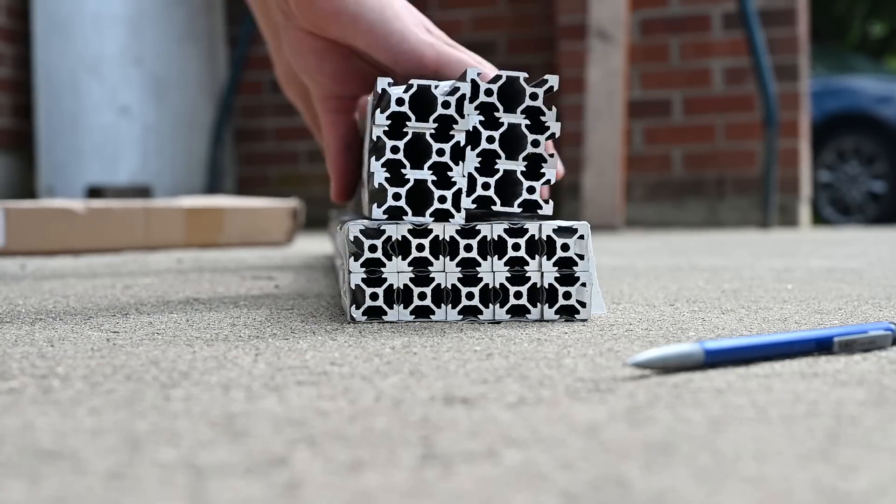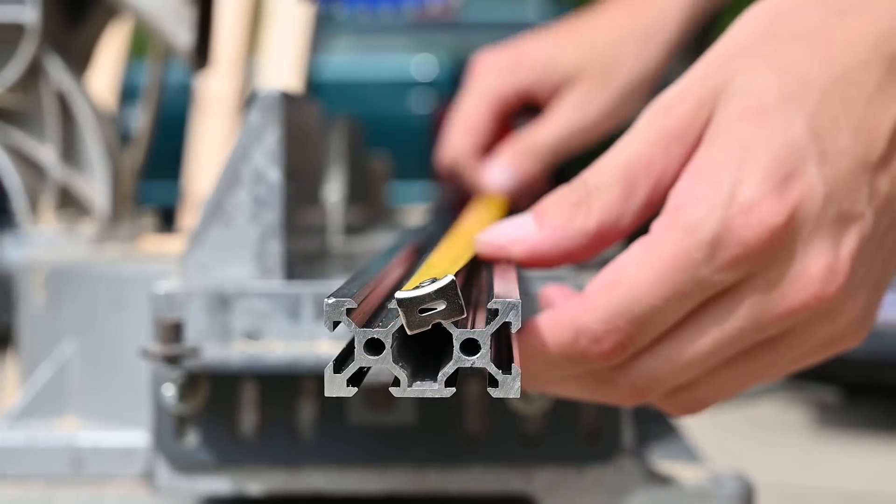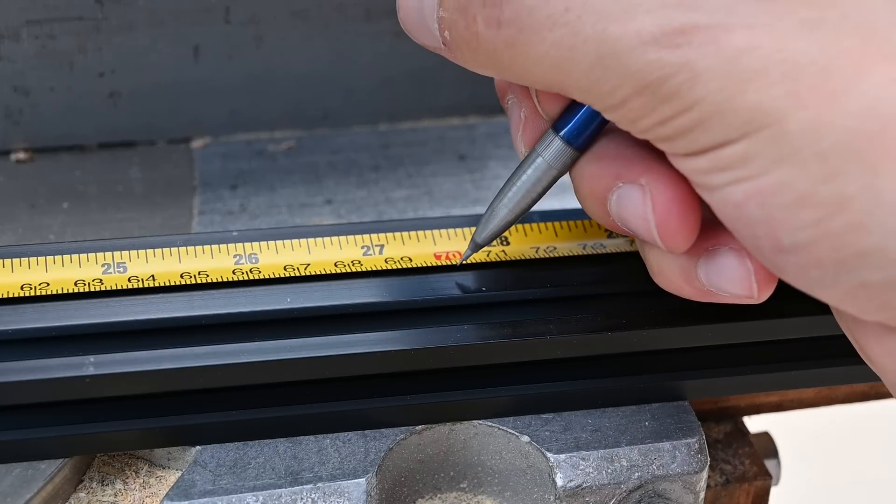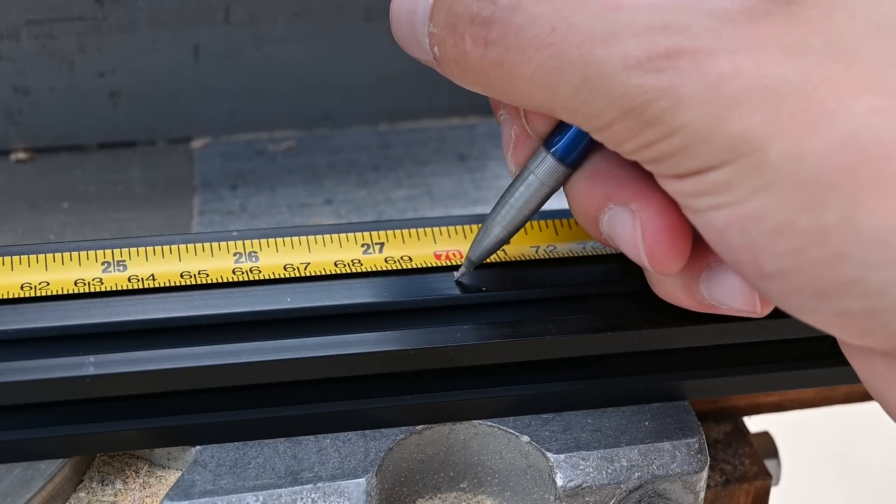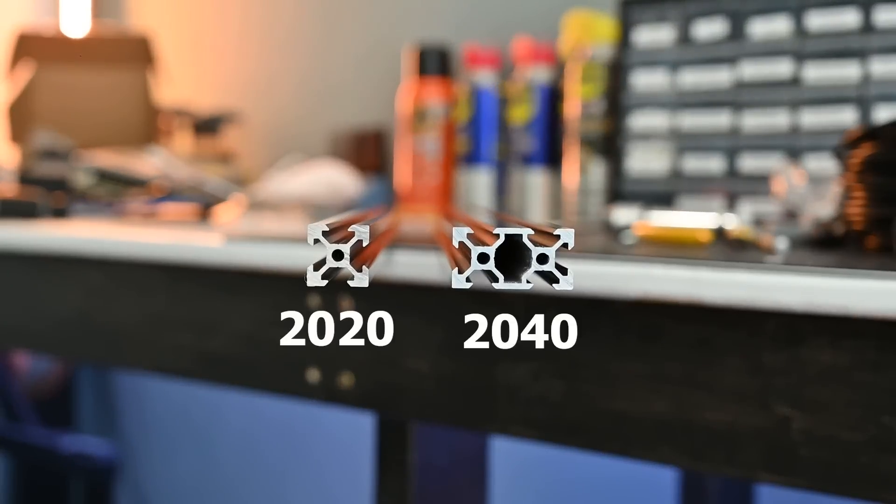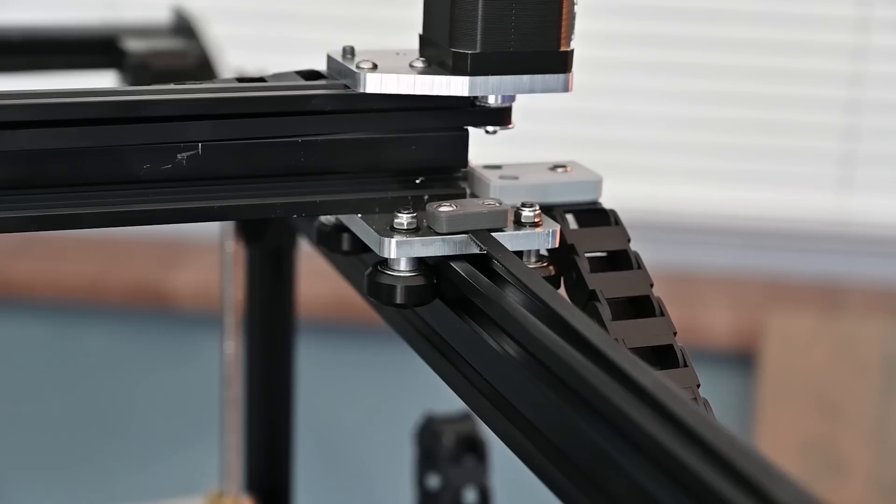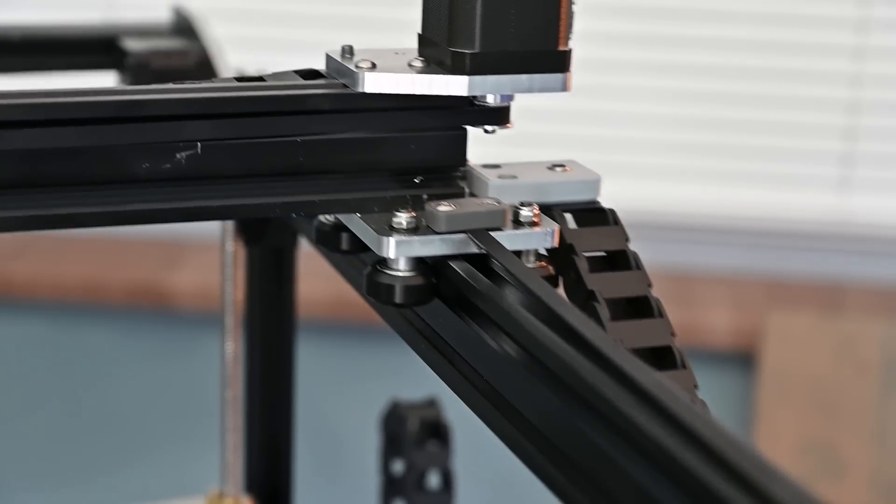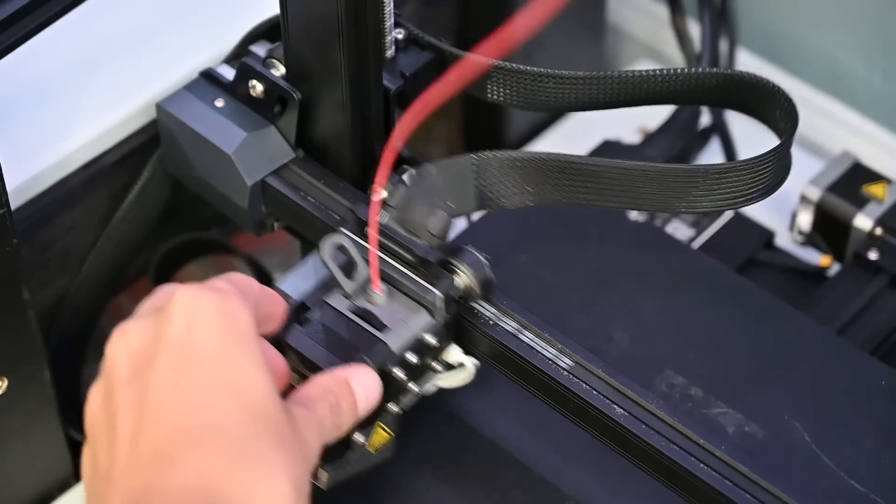To get started I needed to cut all the pieces of the frame to length. I used aluminum extrusion because it allows for a lot of adjustability while assembling. Both 2020 and 2040 V-slot profiles were used for this build. Using the V-slot extrusion allows me to incorporate the linear movement directly into the frame just like most 3D printers these days.